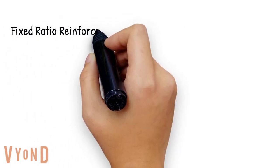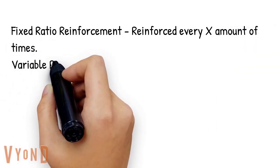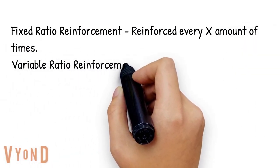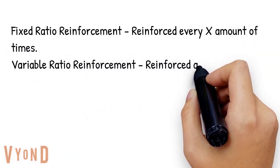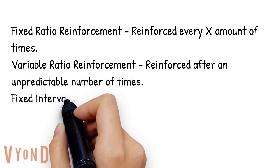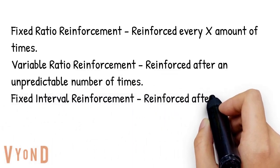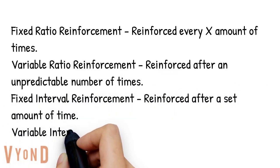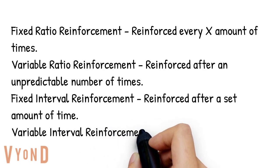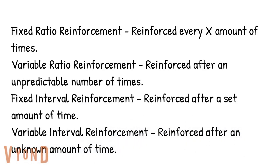To review: fixed ratio reinforcement is reinforcement after a set number of times. Variable ratio reinforcement is reinforcement after an unpredictable number of times. Fixed interval reinforcement is reinforcement after a set amount of time. And variable interval reinforcement is reinforcement after an unpredictable amount of time.